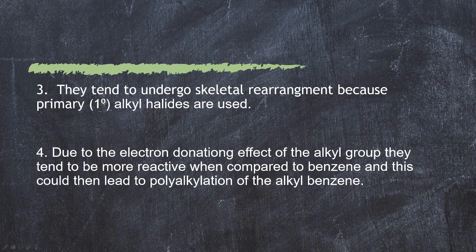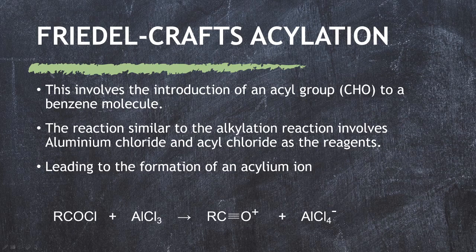Those are the four limitations of Friedel-Crafts alkylation. Now let's move on to Friedel-Crafts acylation. This involves the introduction of an acyl group (RCO–) to a benzene molecule. The reaction is similar to alkylation and involves aluminium chloride (AlCl3) and acyl chloride as the reagents. The acyl group becomes the electrophile — specifically, the acylium ion (RCO⁺) acts as the electrophile and benzene acts as the nucleophile.